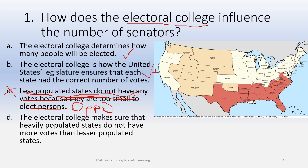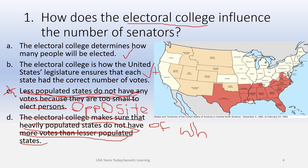Choice D says the Electoral College makes sure that heavily populated states do not have more votes than lesser populated states. That's not what they do. There are more people, so they tend to carry more votes. The United States government does try to make sure there is some fairness — like New York can't have too many more votes than a place like Maine. They try to make it somewhat fair and even, which is how it gets complex.